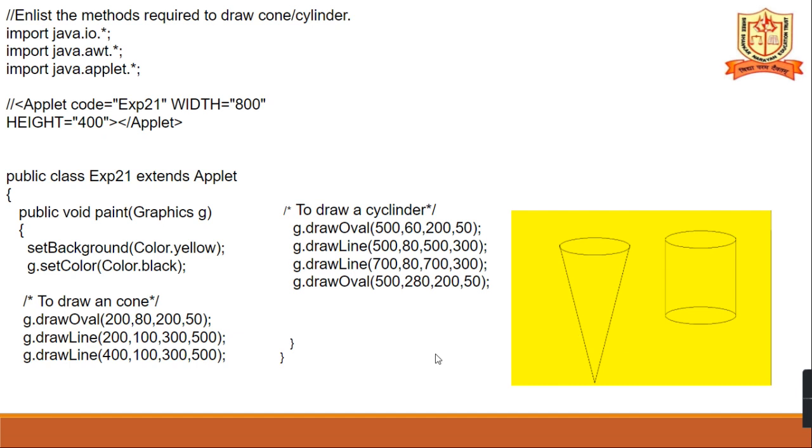So, these are the coding to draw the cones and then cylinder. Draw oval. There are two ovals are there and two lines are there. This is what oval and the cone drawing. Is it clear?